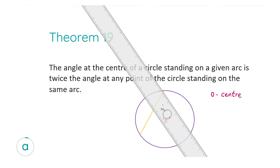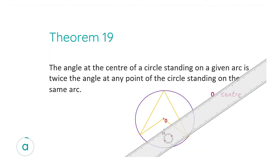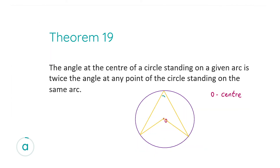Here's my circle with centre O. I now have two angles x and y — these are both standing on the same arc as they're both connected to the same two points. As they're both connected to the same points, they're standing on the same arc and Theorem 19 holds. That means in this circle the angle at y is twice the angle of x.